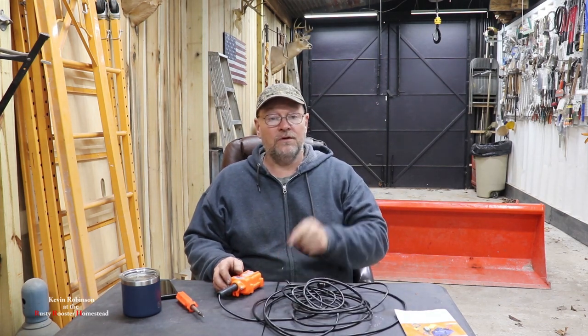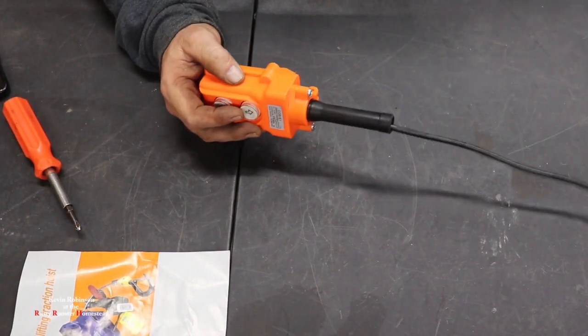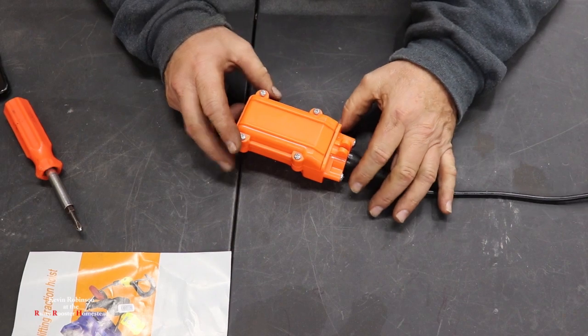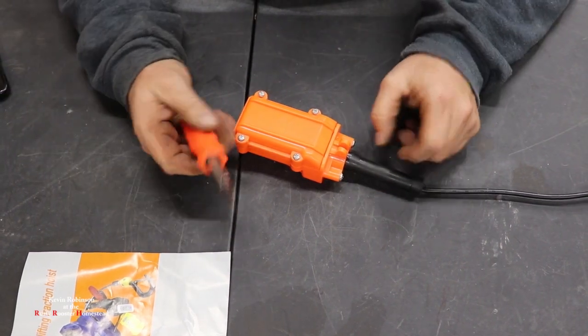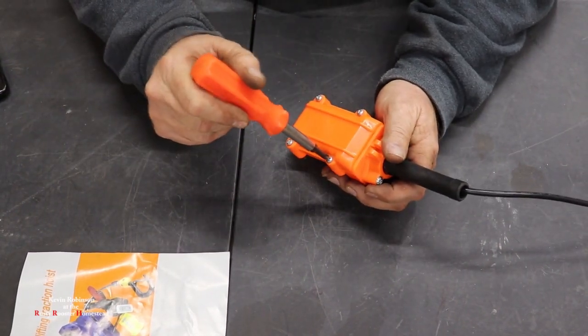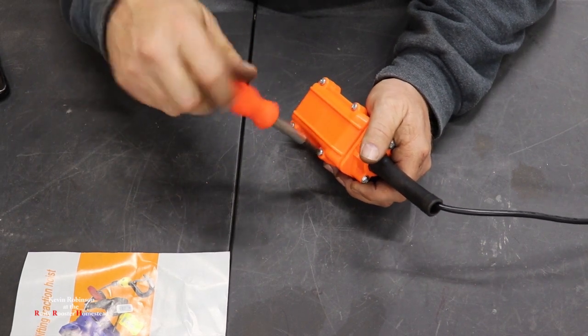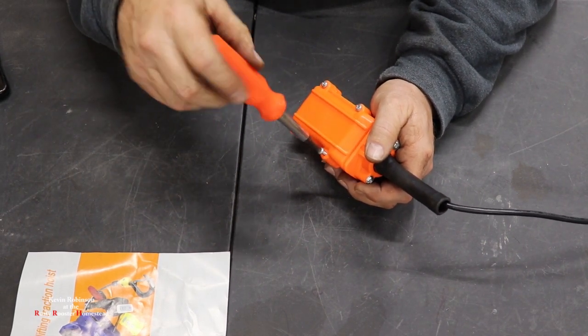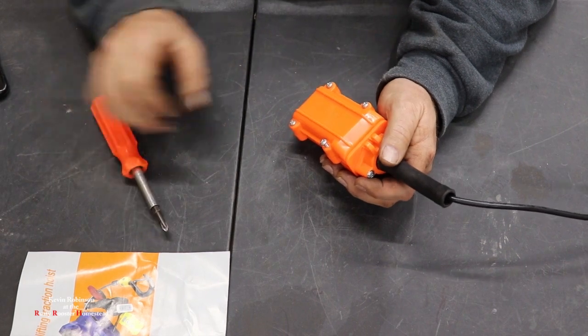So if you're buying one of these and you want to know how to shorten the cord, just watch this video. The first thing we're going to do is grab a Phillips screwdriver and take the back off of this. We're going to see what's on the inside so we'll know if we can shorten this or not.